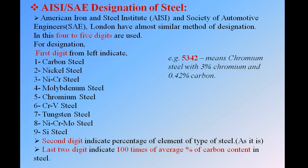In the AISI/SAE system, four to five digits are used. The first digit from the left indicates the type of steel: 1 is carbon steel, 2 is nickel steel, 3 is nickel-chromium steel, 4 is molybdenum steel, 5 is chromium steel, 6 is chromium-vanadium steel, 7 is tungsten steel, 8 is nickel-chromium-molybdenum steel, and 9 is silicon steel.